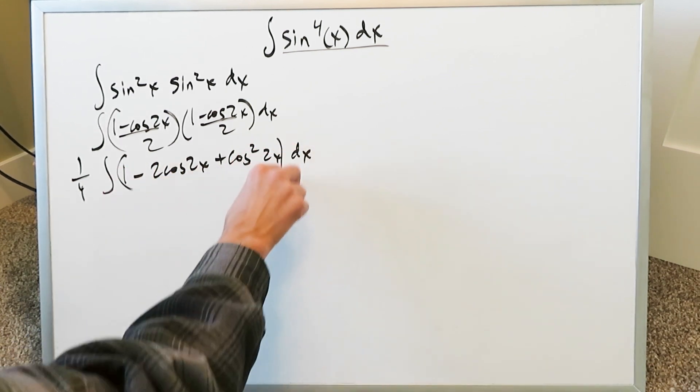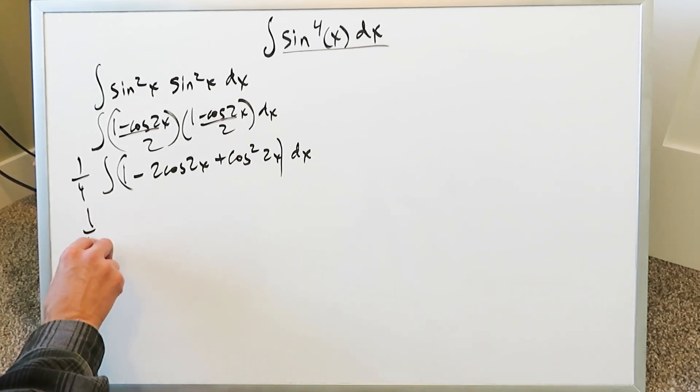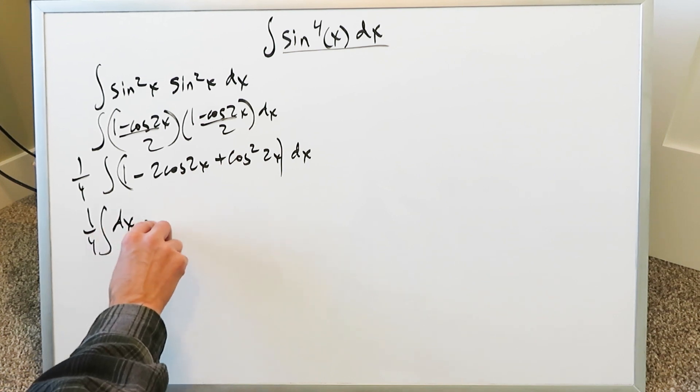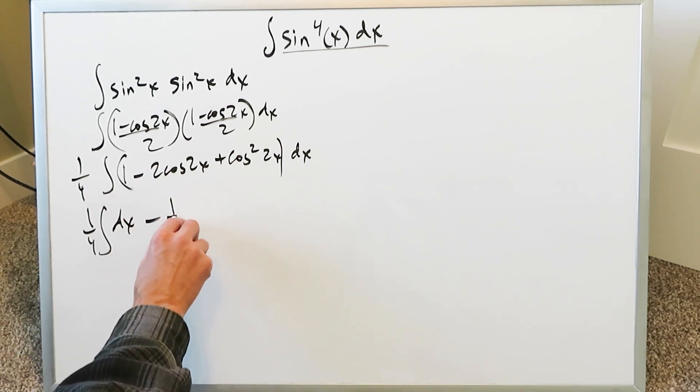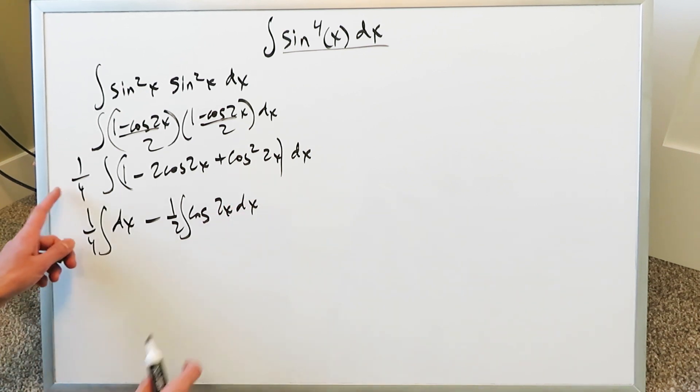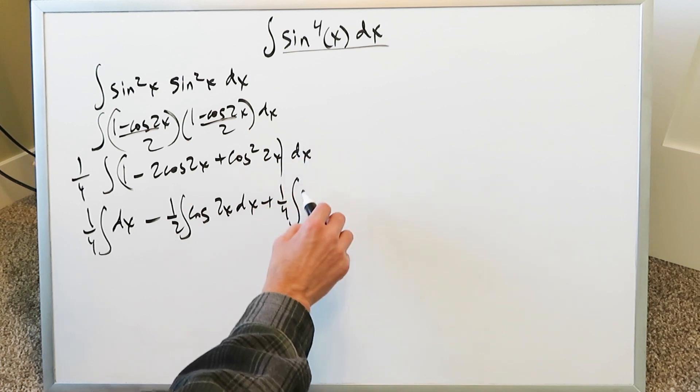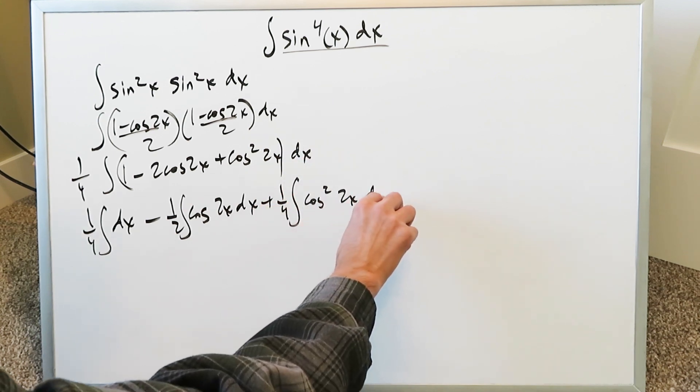That's all you're doing and you're opening this up and now you're separating it across its own integrals. We'll have a 1 over 4. Here I have a dx minus 1 over 4 times 2 is a 1 over 2 cosine 2x dx. Then 1 over 4 with that I'll have a 1 over 4 integral cosine square 2x dx.